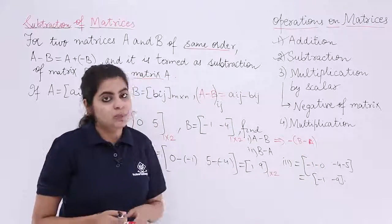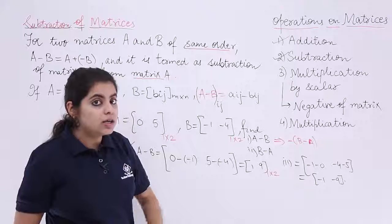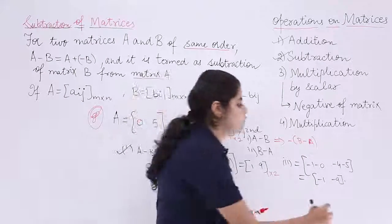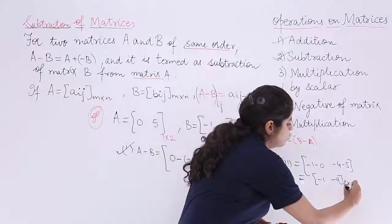But yes, in this question we observed it there and then the order of the resultant matrix is what? It is same as the order of the individual matrices. So one row, two columns.